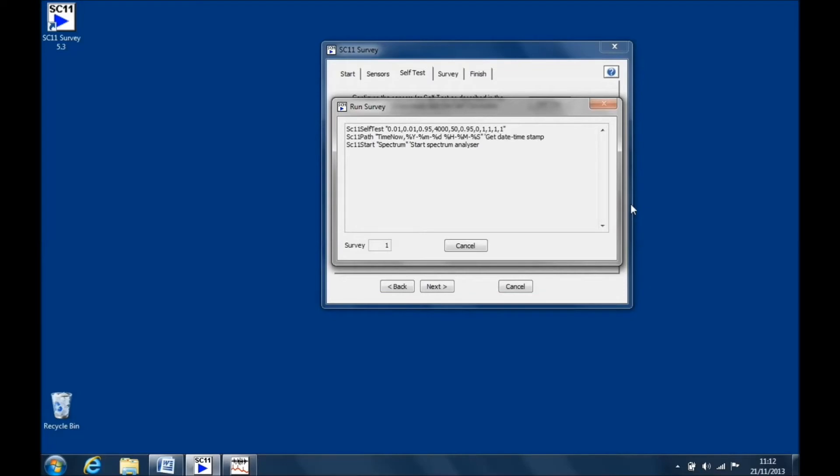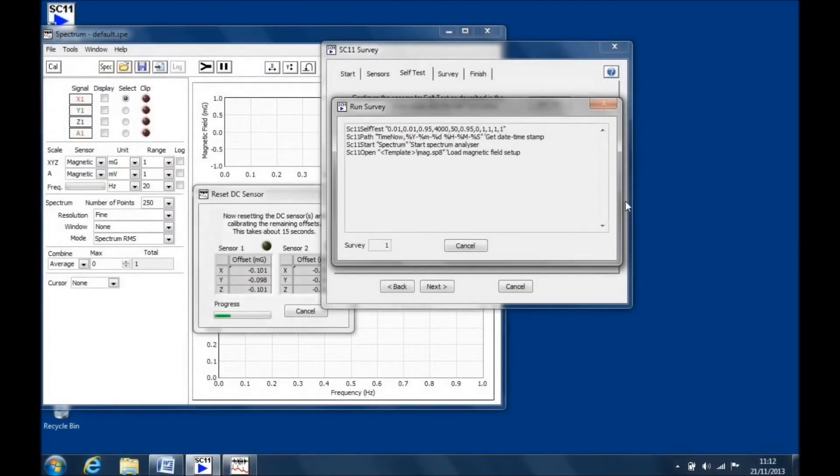Here you see the macro running different programs that are part of the analysis system software to take readings from the sensors. The self-test survey runs for roughly 2 minutes, but here you will see the self-test being speeded up.